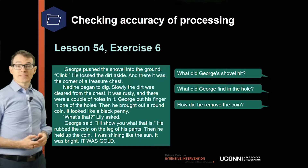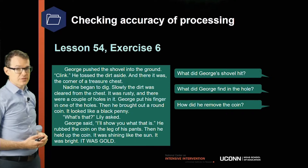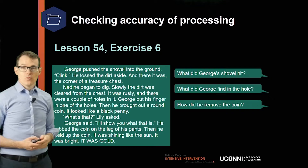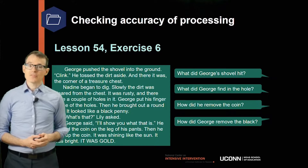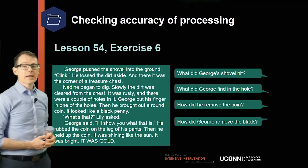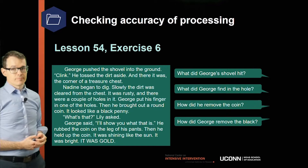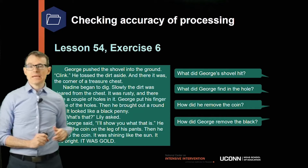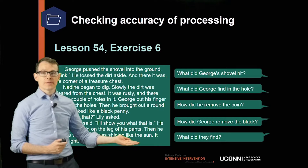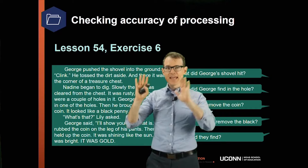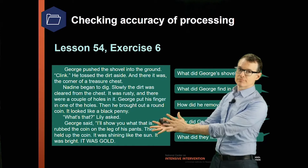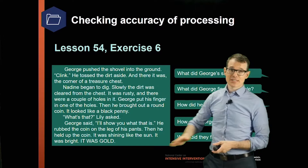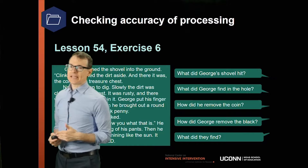Continuing: 'What's that? Lily asked. George said, I'll show you what that is. He rubbed the coin on the leg of his pants. Then he held up the coin—it was shining like the sun. It was bright. It was—everybody?' [Students: 'Gold.'] Questions: 'How did George remove the black from the penny? Write on your whiteboard.' [Students: 'He rubbed it on the leg of his pants.'] 'Our last question: what did they find? Pause for a second, think about it, look back. We'll all say the answer together. Everybody?' [Students: 'Gold.'] So now you get a picture of how we've decided to check accuracy processing.